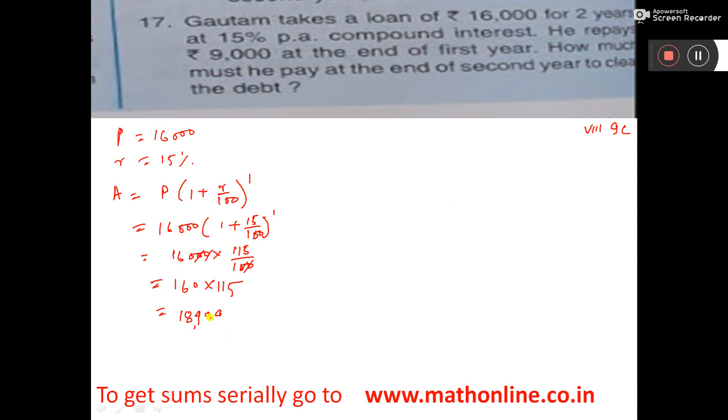He repays 9,000. So what is the left amount? You subtract and get 9,400. This is the left amount for the second year.